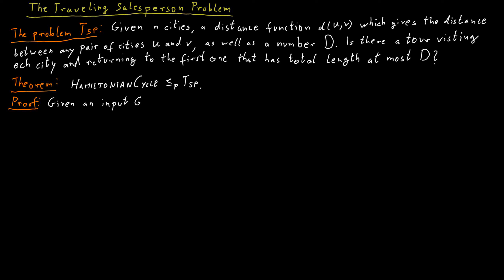So if we have an input for Hamiltonian cycle, we have this unweighted, undirected graph G. Then what we do is we create n cities, where n is the size of the vertex set of the graph G.